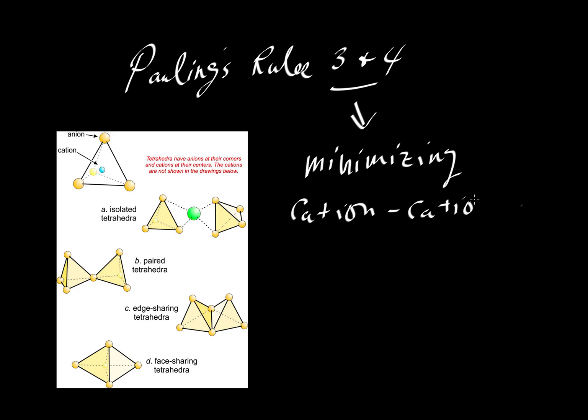They are both about minimizing cation-cation repulsions. So, minimizing cation-cation repulsive forces. And if we can minimize those forces, if a crystal can do so, then that crystal structure is more stable. So, Rules 3 and 4 are related in this way.